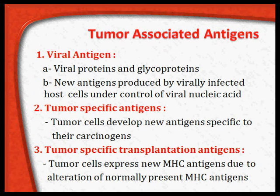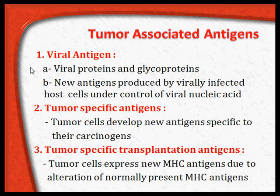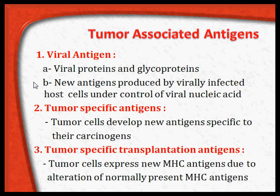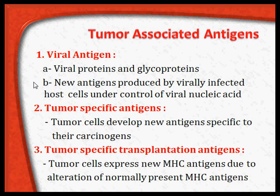Of all the types of tumor markers, tumor-associated antigens are very important. They can be viral antigens — namely viral proteins and glycoproteins incorporated into the tumor or produced by viruses that cause the tumor. There may also be new antigens produced by virally infected host cells under the control of the viral nucleic acid, because the viral nucleic acid content becomes integrated into the DNA of the host cell.